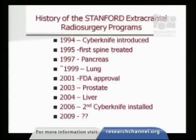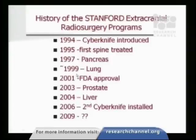Our history: the CyberKnife was introduced in 1994. We quickly began testing whether we could use this outside of the brain, starting our first spine treatment in 1995. We quickly moved to pancreatic tumors as proof of principle that we could treat tumors that move with respiration, then evolved to treating more lung tumors starting in 1999 — a program that grew dramatically and caught on around the world. The device itself was FDA approved in 2001. All patients treated before that were on protocol, and since then we've kept our protocols open to learn about optimal use.